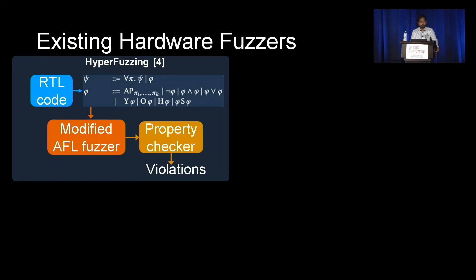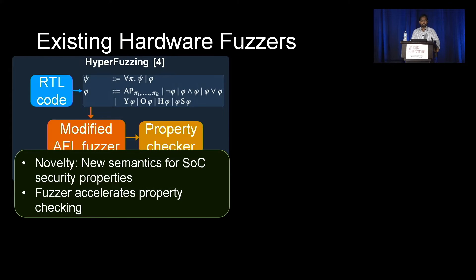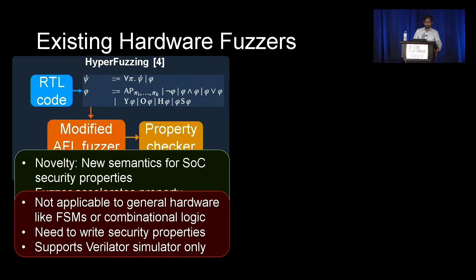HyperFuzzing is another type of hardware fuzzer. It provides new semantics for SoC security properties and generates inputs to prove these properties, making it useful for accelerating property checking in SoC designs. However, it's not applicable to generic hardware like FSMs and combinational logic, since the properties are more for master-slave interactions and bus communications. Security properties must be written before using the tool, and it only supports the Verilator hardware simulator, limiting its applicability.